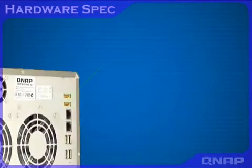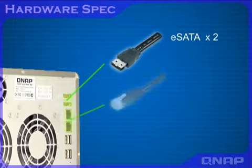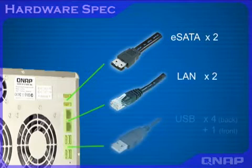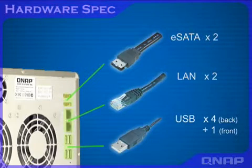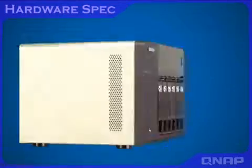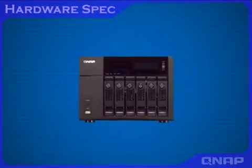The TS639 Pro is equipped with 2 eSATA ports, 2 Gigabit LAN ports, 4 USB ports at the back, and one USB port on the front for expanding storage capacity.